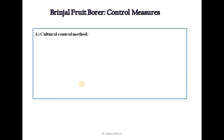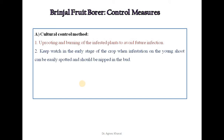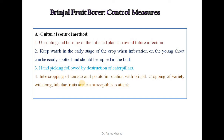The cultural control methods for brinjal fruit borer include uprooting and burning of infested plants to avoid future infestation. Keep watch in the early stage of the crop when infestation on young shoots can be easily spotted and nipped in the bud. Handpicking followed by destruction of caterpillars is recommended. Intercropping of tomato and potato in rotation with brinjal is advised. Cropping varieties with long tubular fruits are less susceptible to attack. Use of light traps and kerosene-water to kill adult moths are also effective.